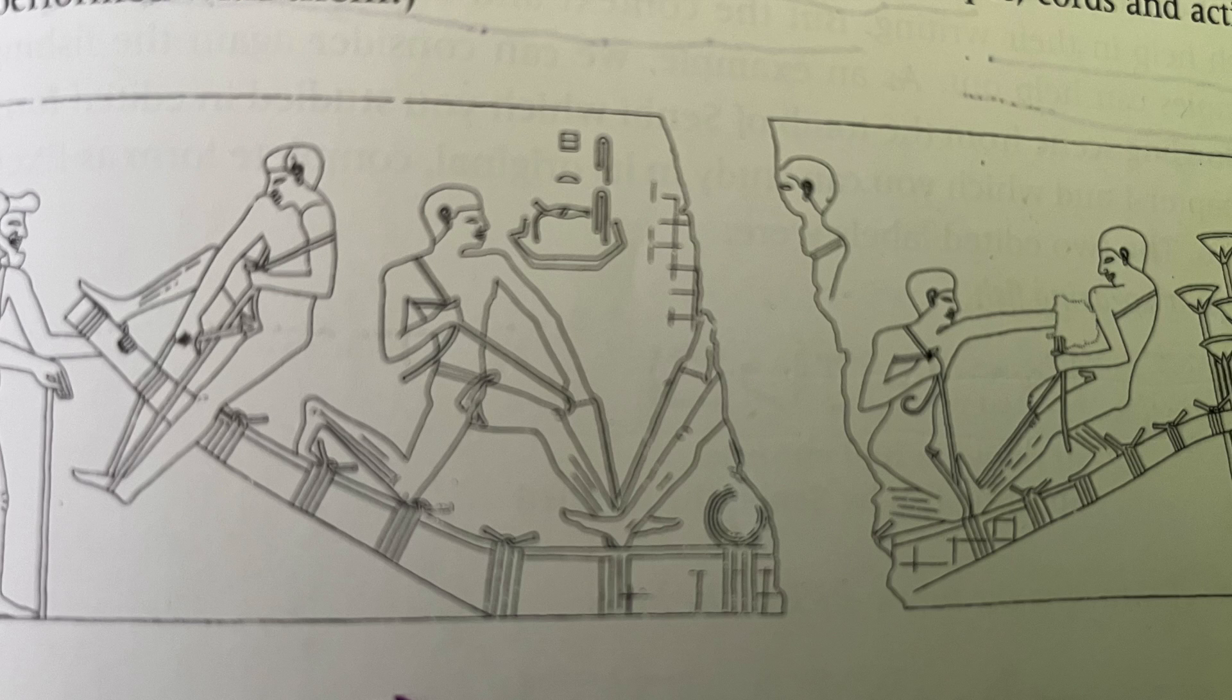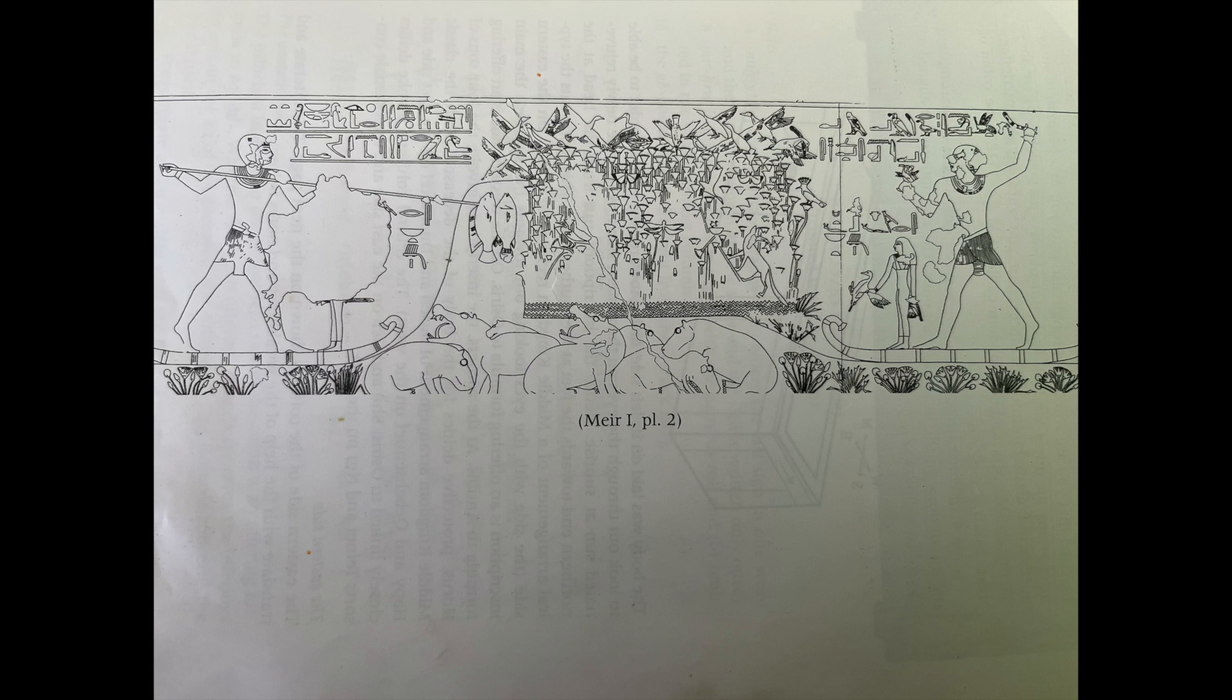But looking at the picture, there you go. What are they doing? They're binding a skiff. And you can see the skiff itself that they're on looks just like the determinative of the skiff there. Again, another way the image reflects the words.